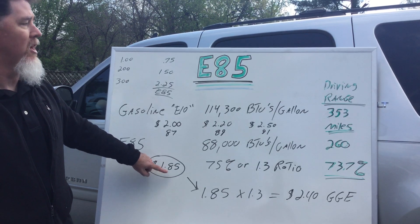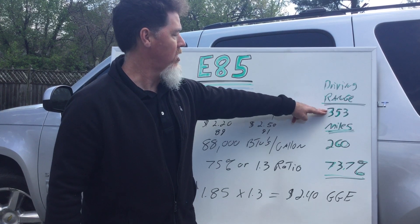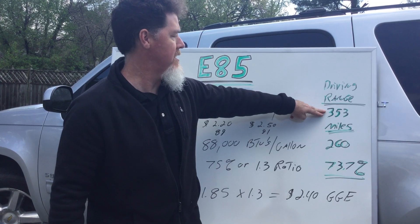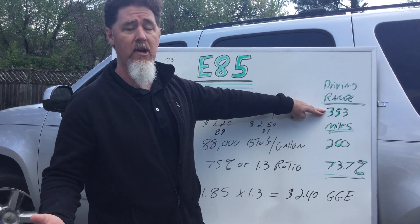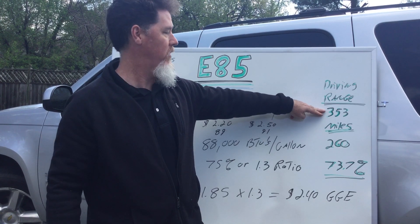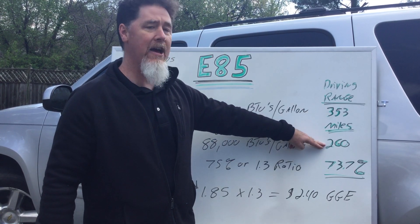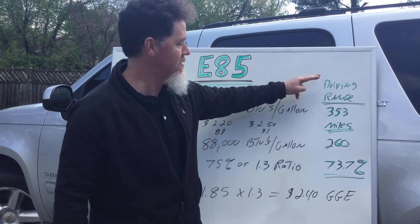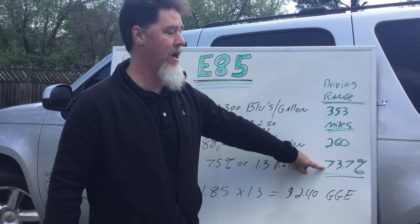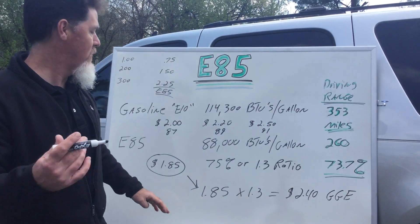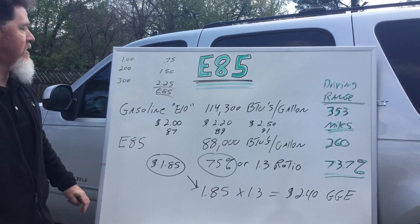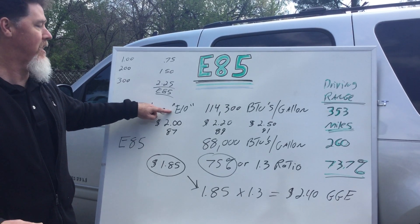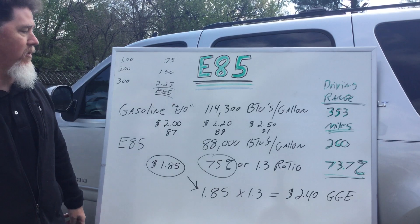You're going to get less range. On one window sticker I looked up for a flex fuel vehicle, running on gasoline you would get 353 miles typically on a full tank, but with E85 you're only going to get 260 miles on a tank — which works out to about 73.7%. So give or take 75%, depending on the type of gasoline, alcohol content, heavy or light gasoline, summer or winter blend — there are a lot of different factors.